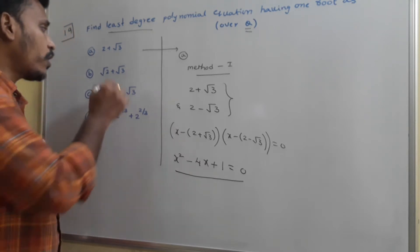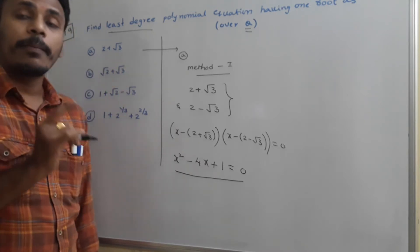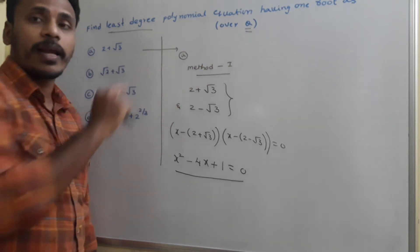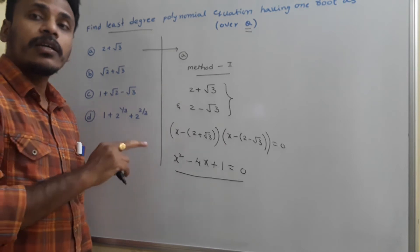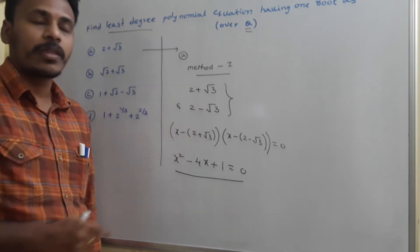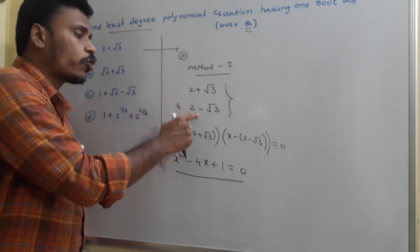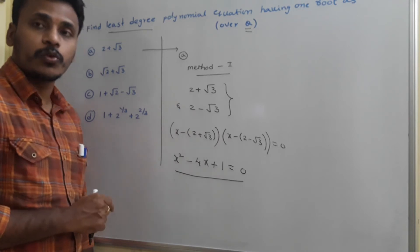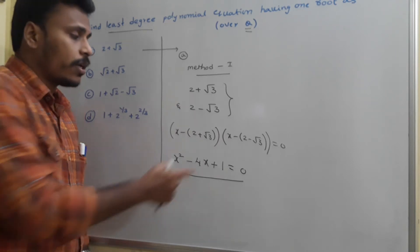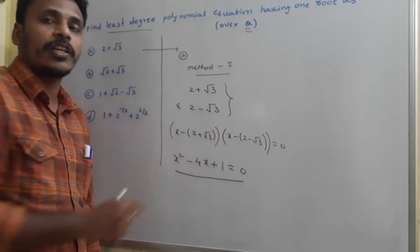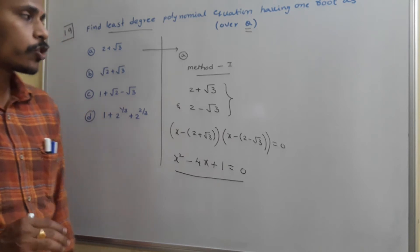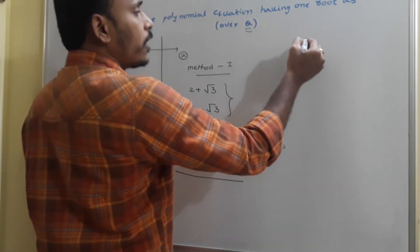So this is the least degree polynomial equation having one root as 2 plus root 3. One root is given, but since the polynomial is over rationals, we know the other root is 2 minus root 3. This product gives the required equation. That is Method 1.